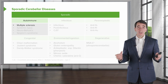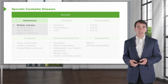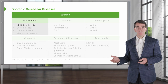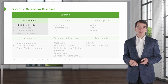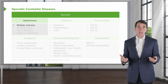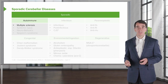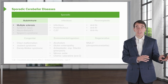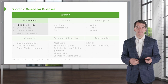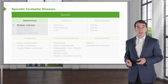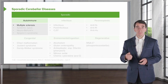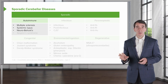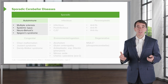There are many diseases that affect the cerebellum. This table is important for organizing all of those conditions. When thinking about cerebellar pathology, I categorize conditions into those that occur sporadically — acquired over the course of a lifetime — and those that are inherited. The acquired sporadic conditions can be autoimmune, such as multiple sclerosis, systemic lupus, neurobehcet's, and Sjogren's syndrome, all of which can affect the cerebellum and cerebellar circuitry.